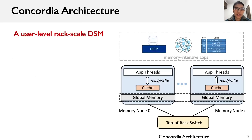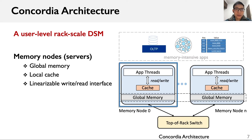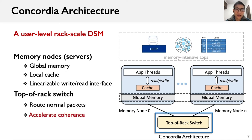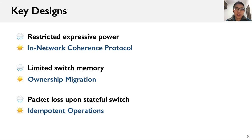Concordia is a user-level rack-scale DSM. The figure on the right shows its architecture, which mainly consists of a set of memory nodes and a top-of-rack switch. Each memory node divides its DRAM into two parts: a global memory and a local cache. The global memory from all memory nodes constitutes a unified memory space, and application threads interact with the local cache via read and write interfaces. The switch routes normal packets and accelerates cache coherence.